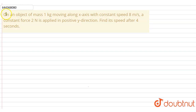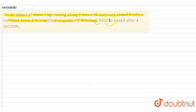Hello students, our question is: on an object of mass 1 kg moving along the x-axis with constant speed 8 m per second, a constant force of 2 N is applied in the positive y direction. Find its speed after 4 seconds.